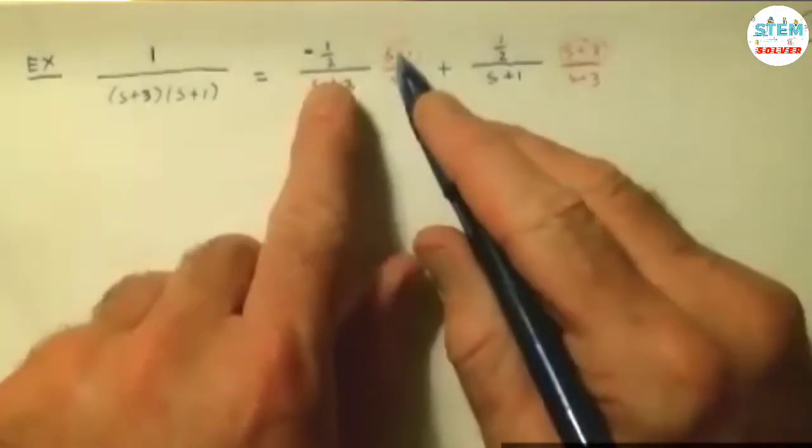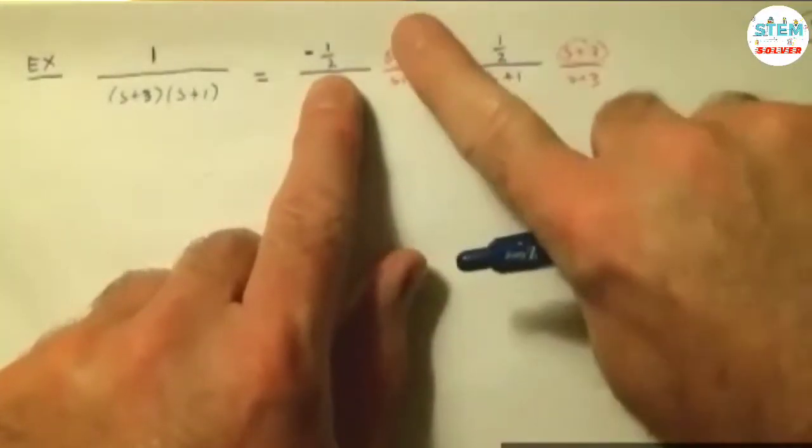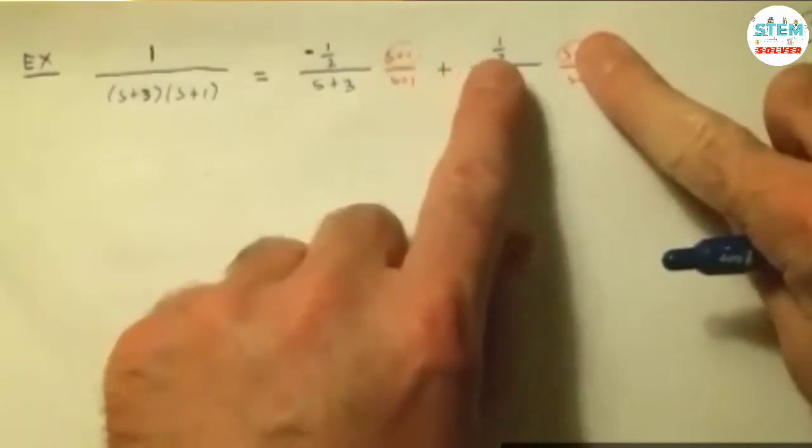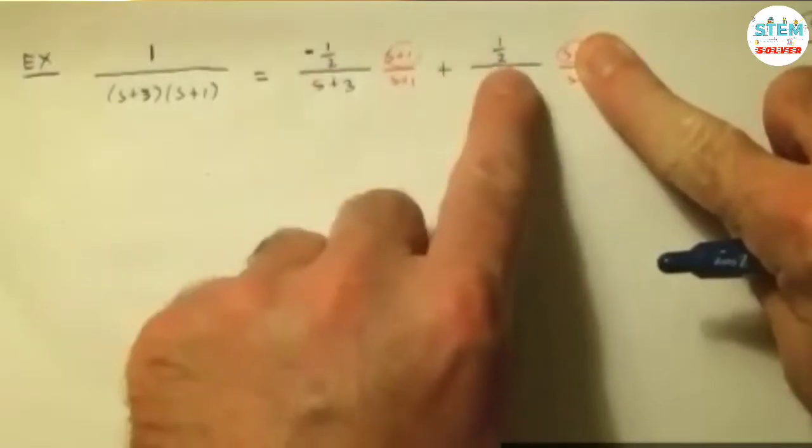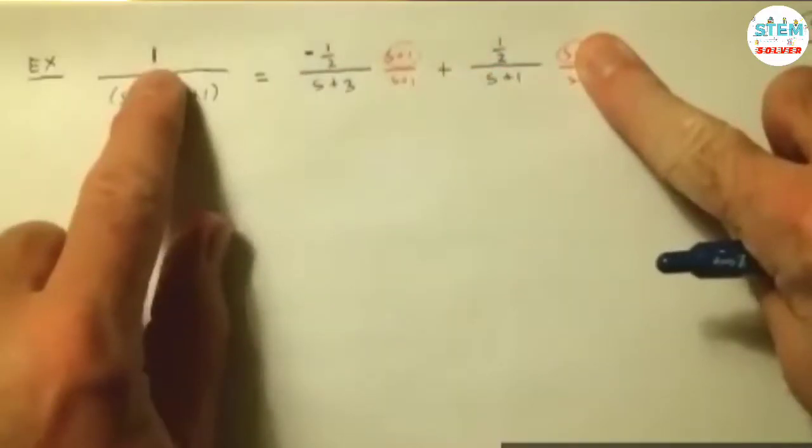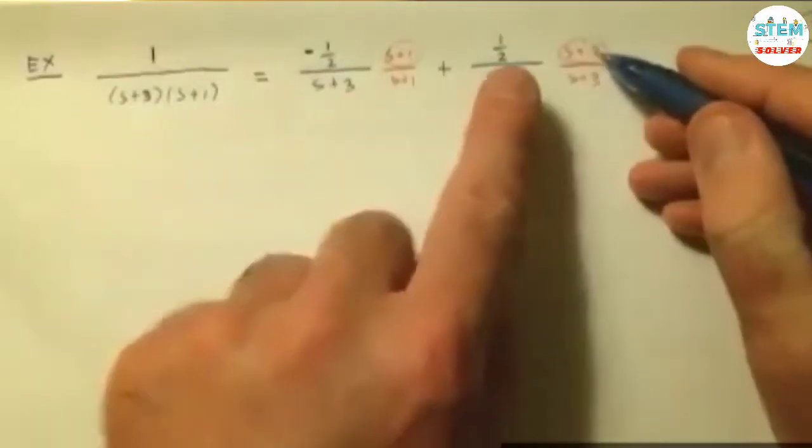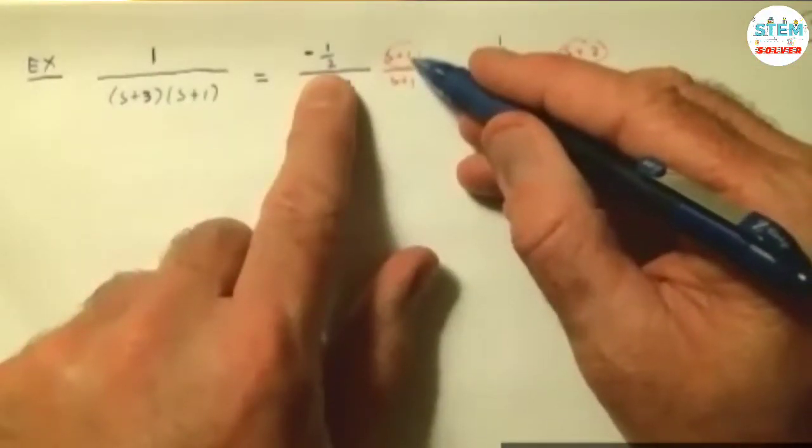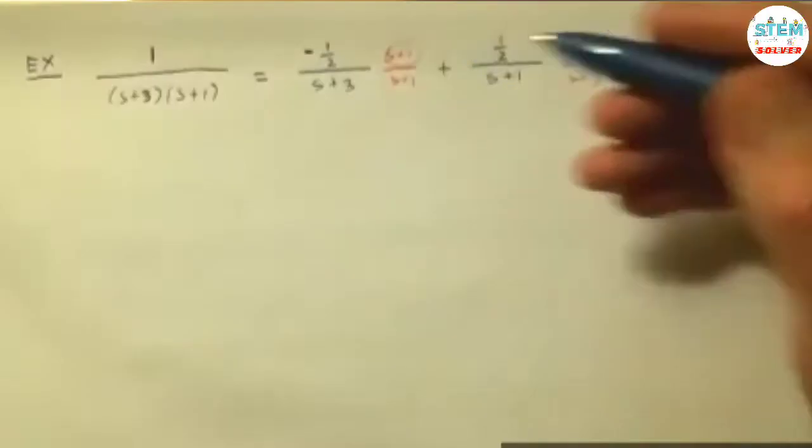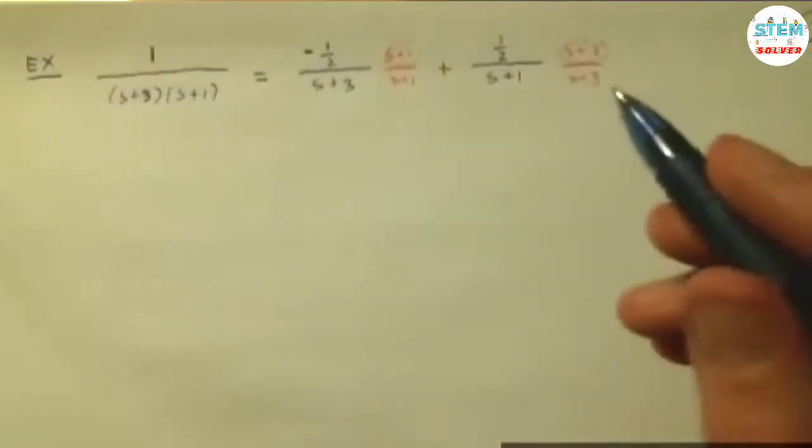That's what happens here if I multiply. I have a negative 1 half s, right? And then I have a 1 half s. This is why I want opposite signs for the same number. Because I don't want an s. I don't have an s here. Up here, I have 3 halves. And this would be negative 1 half. And 3 halves minus 1 half is 2 halves, which is 1, right?